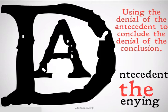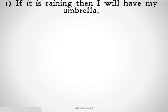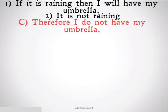Let's take a look at some examples to understand why this is a fallacy. If it is raining, then I will have my umbrella. It is not raining, therefore I do not have my umbrella. As with our previous example, it's possible I just take my umbrella to work every single day. So there could be a case where it's not raining, but I have my umbrella.